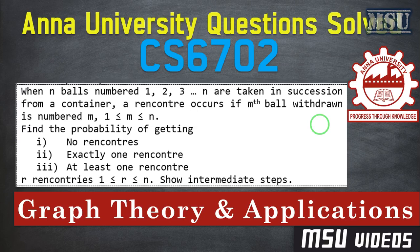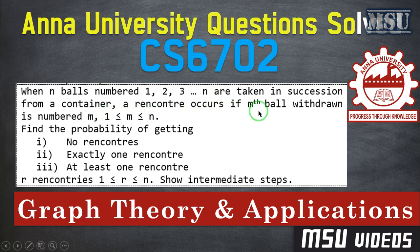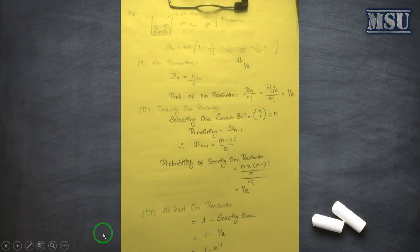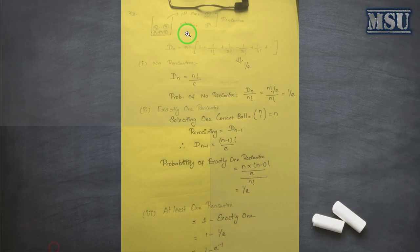Hi friends, welcome to MSE videos. In this video we are going to solve this problem: when n balls are numbered from 1 to n and taken in succession from a container, an encounter occurs if the mth ball withdrawn is numbered m. This is one of the problems asked in a 16-mark question, and with this we can easily solve it.